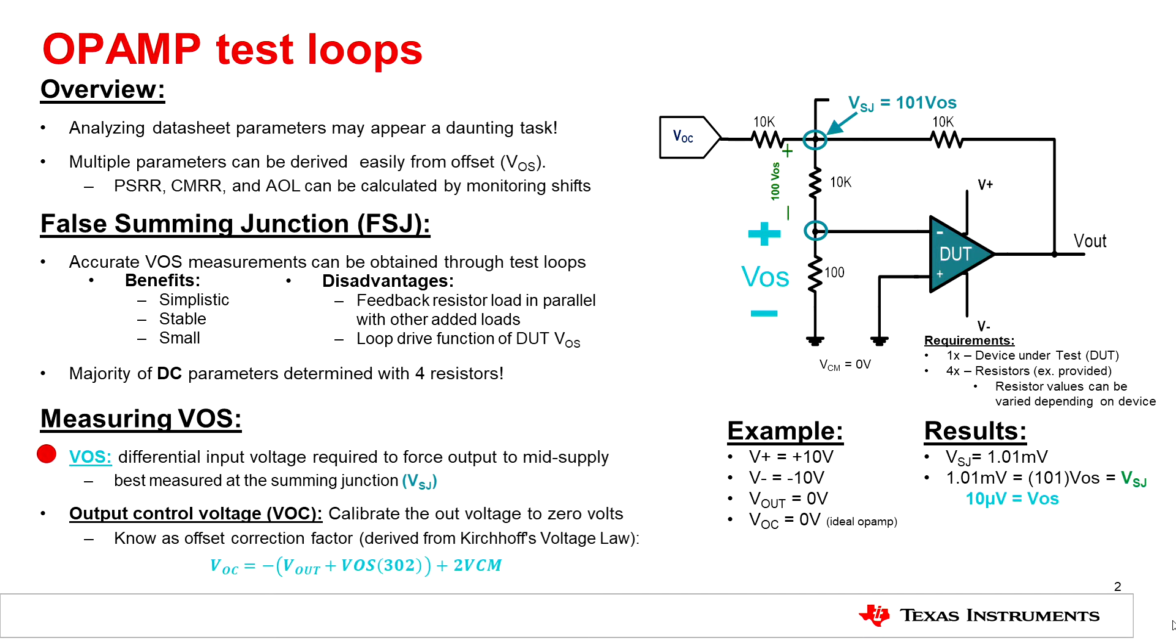Offset voltage is defined as the differential input voltage required to force the output to mid-supply. But this is best measured at the false summing node provided in the schematic and defined as V sub J of S.